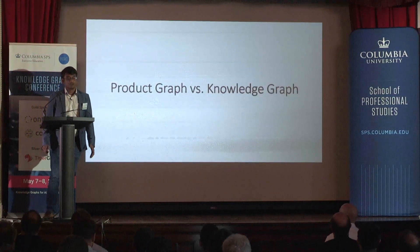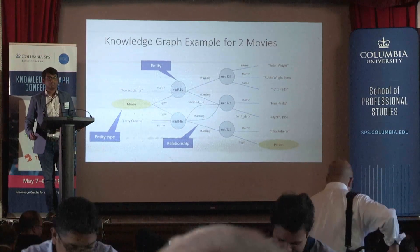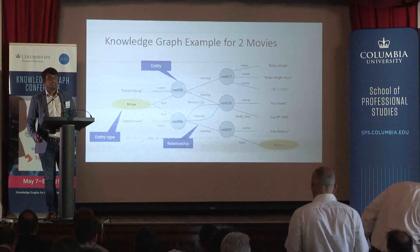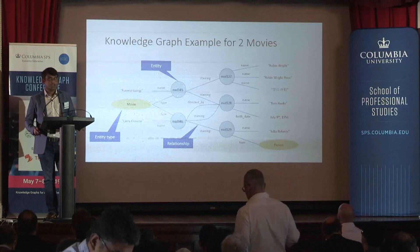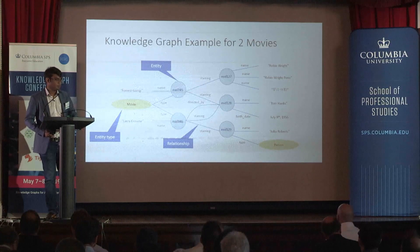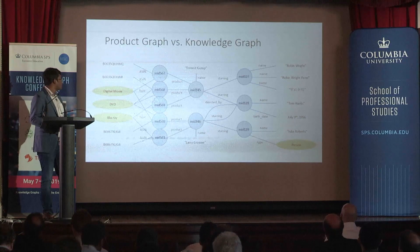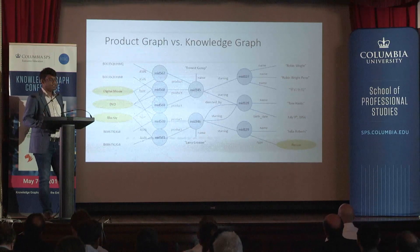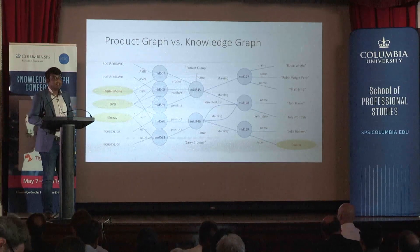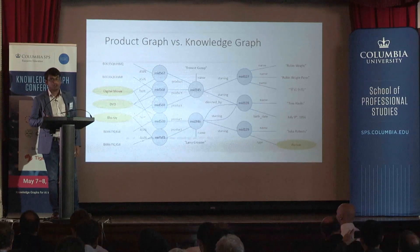What is the difference between a product graph and a knowledge graph? A knowledge graph models entities, relations, and types. For instance, Julia Roberts is an entity of the type person. She appeared in the movie Larry Crown, so Larry Crown is of the type movie, and the relationship between them is of the type acting. A product graph models entities that we consume. The movie Larry Crown may appear in a digital format, a DVD format, or a Blu-ray format, which now becomes its types. Therefore, all the entities associated with Larry Crown in a knowledge graph also become a part of the product graph.